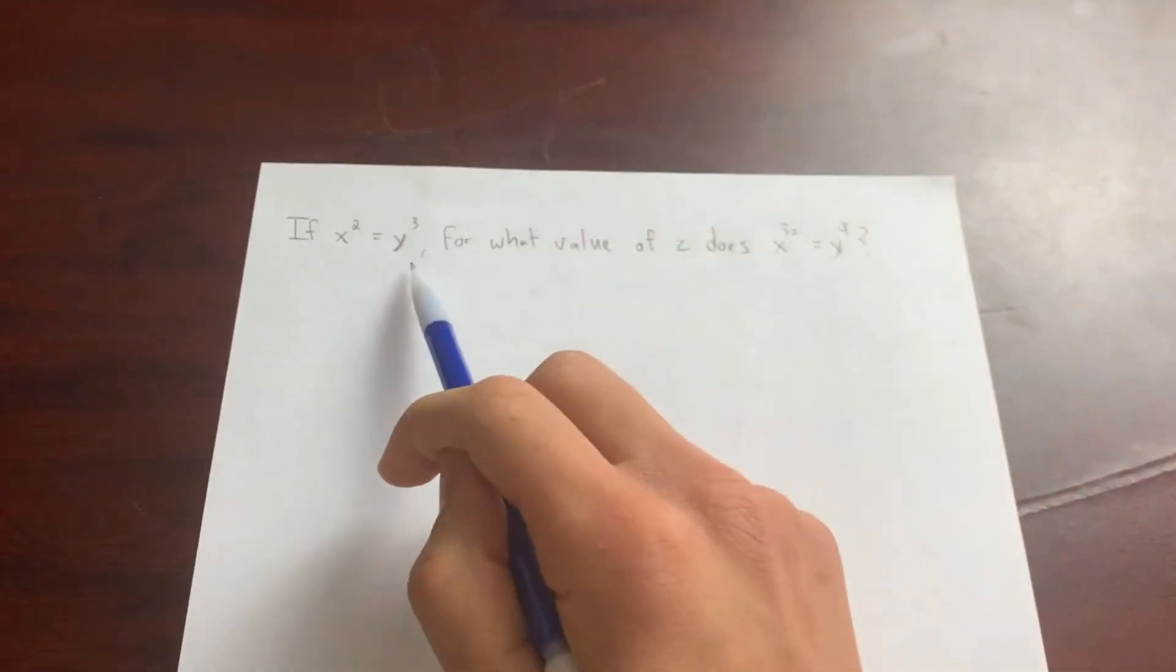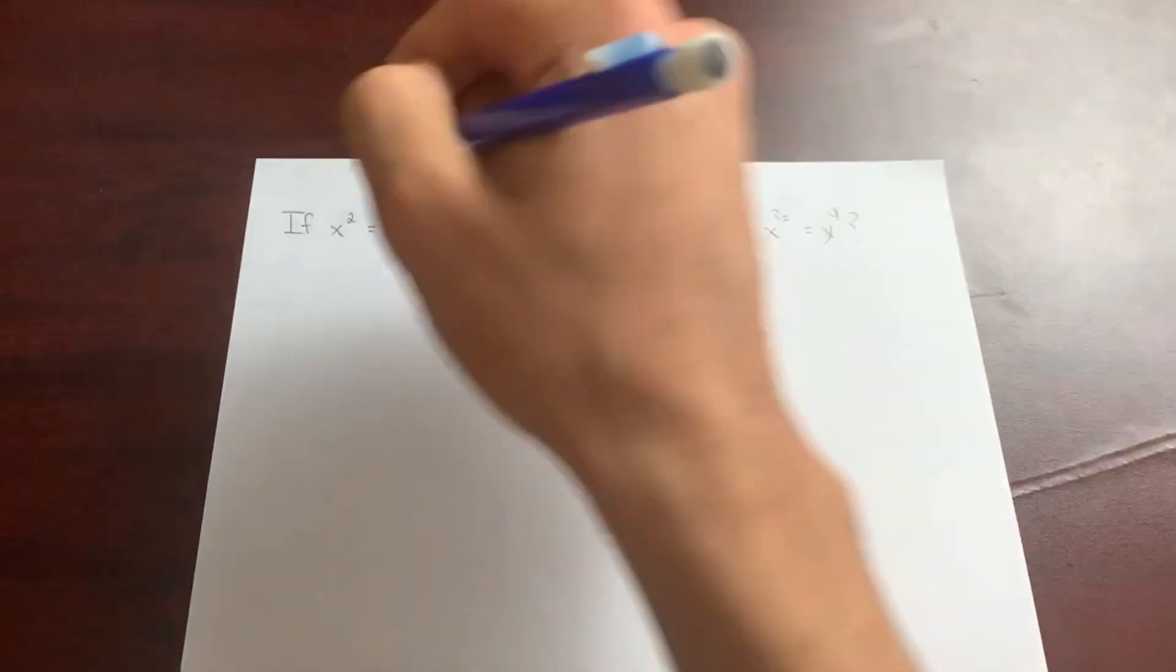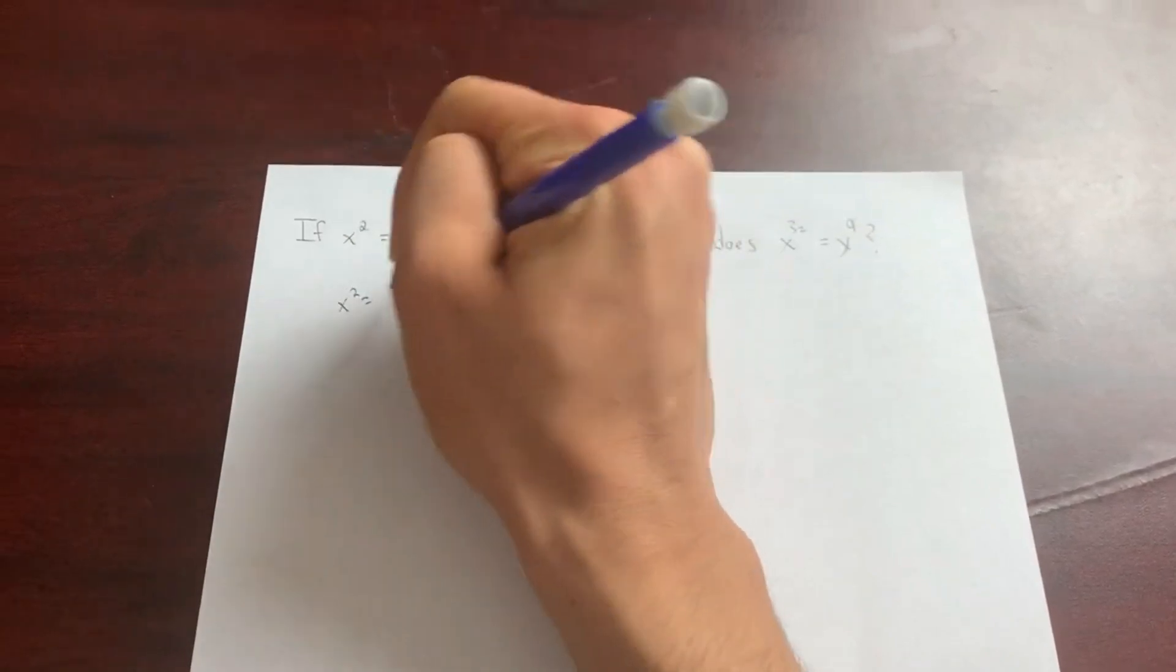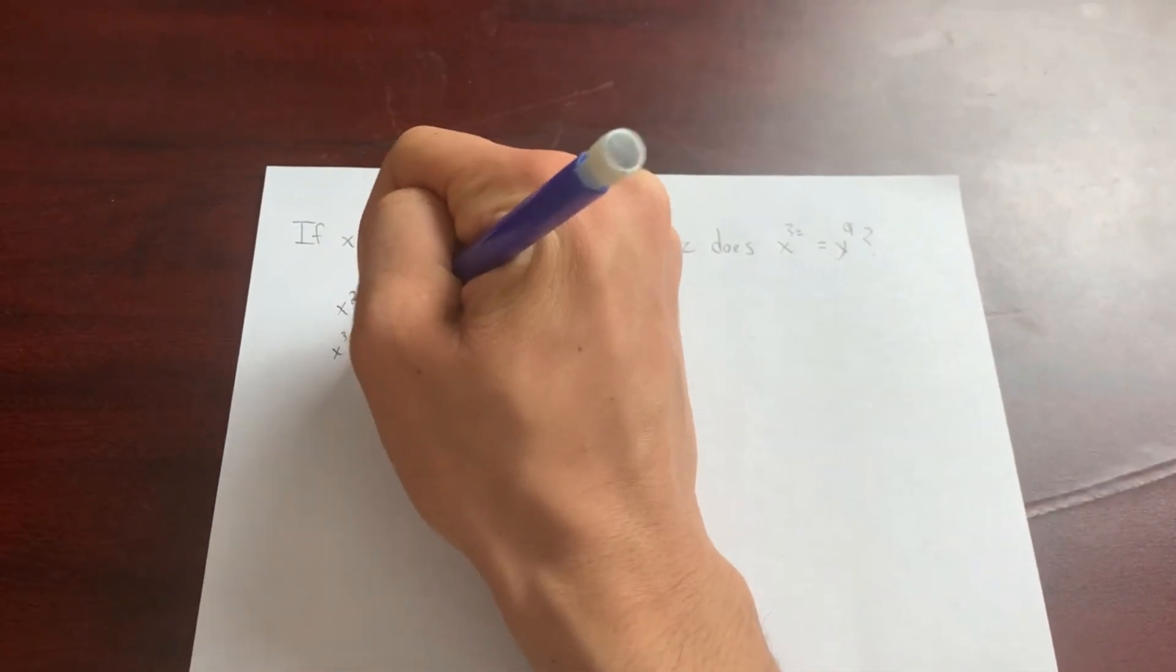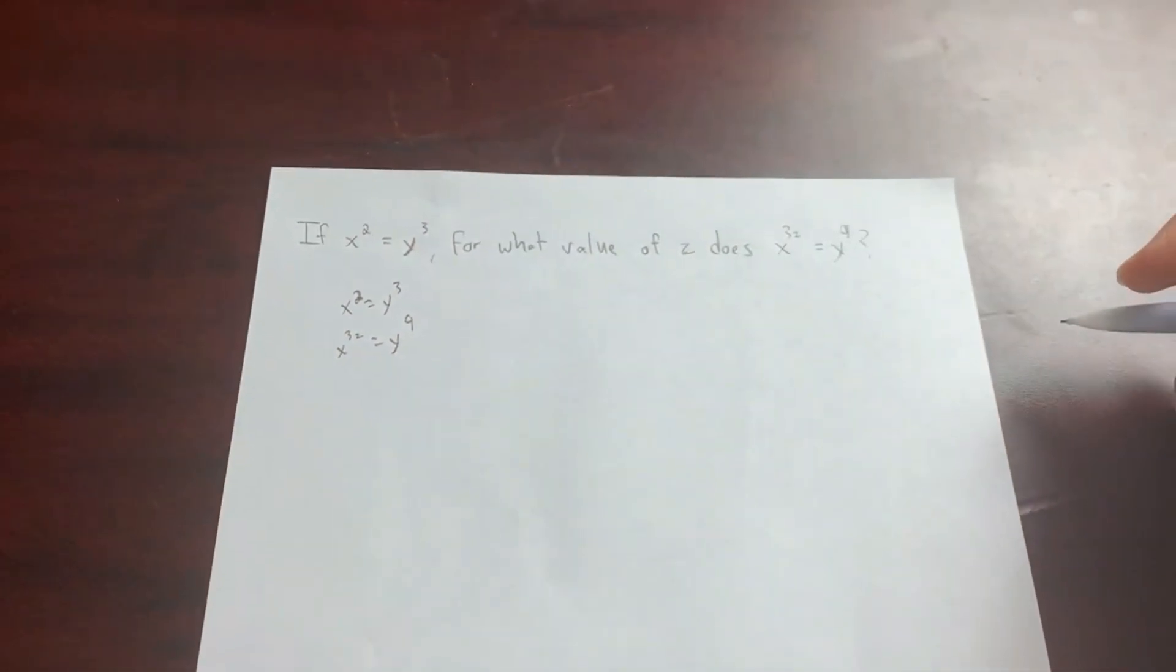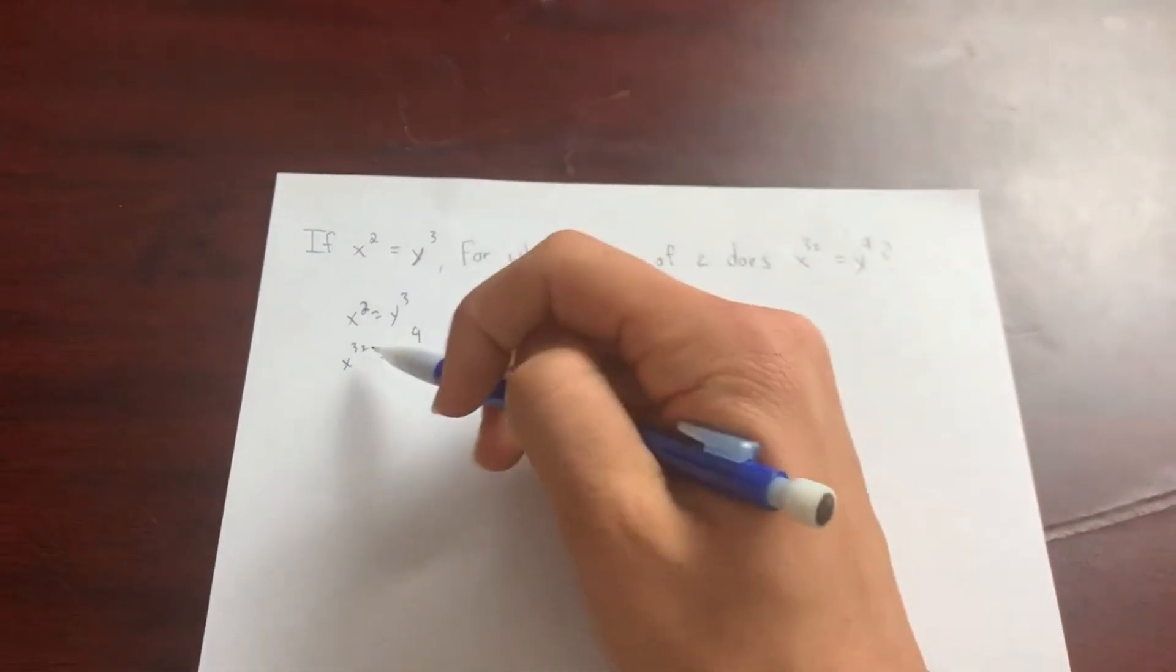So right here, you see that x squared equals y cubed. What I would do first is just take out the important information. So x squared equals y cubed, x to the 3z equals y to the 9. Now I'm trying to find z, right?